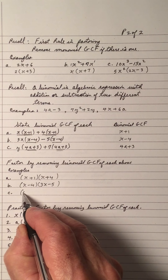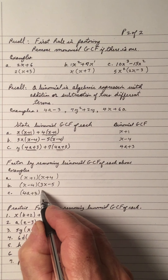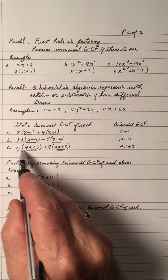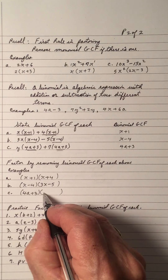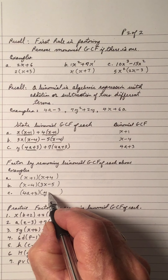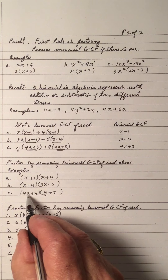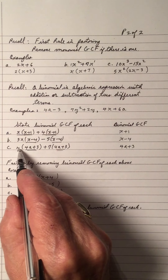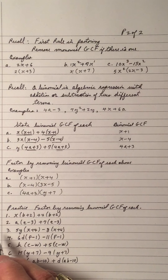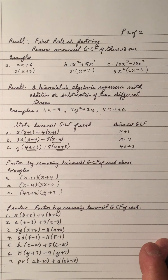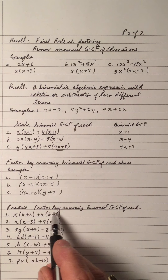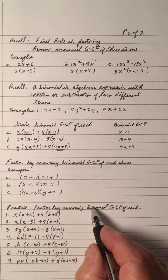For part c, 4a plus 3 goes in a bracket. Dividing the first expression by 4a plus 3 gives y, and dividing the second by 4a plus 3 gives plus 7. So the factored form is (4a plus 3)(y plus 7). Now practice: pause the video, work out all these problems, and press play to check your answers.